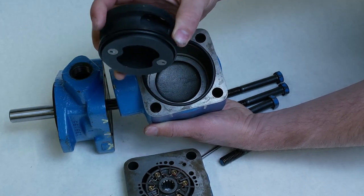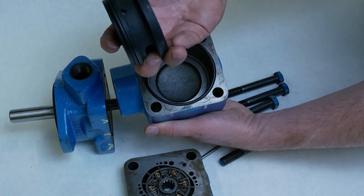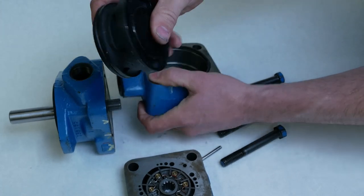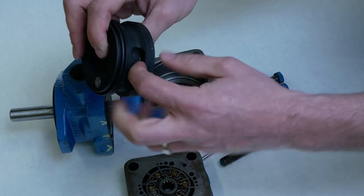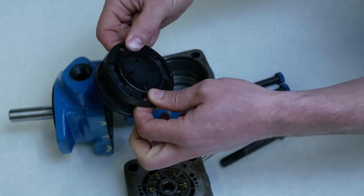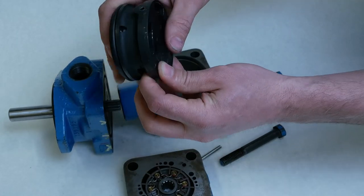So the seals are what's allowing the ports to be separate from the case oil so our work port oil can come in get around these two passageways right here and right here to get into the work ports.